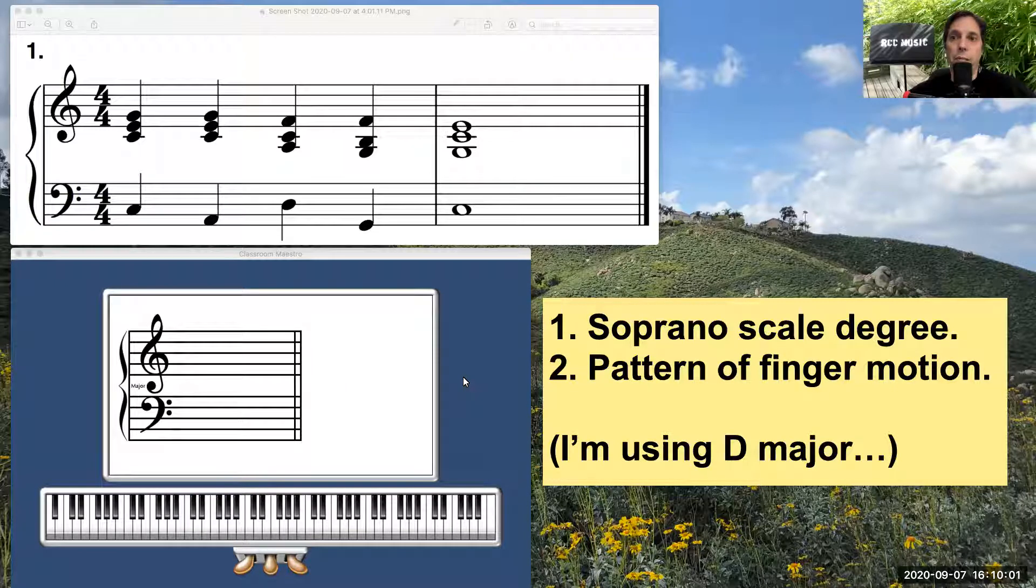So if we think about the finger motion, we can see we start the first chord. The soprano scale degree is five, so we want to remember that for when we transpose, and it's playing a one chord.